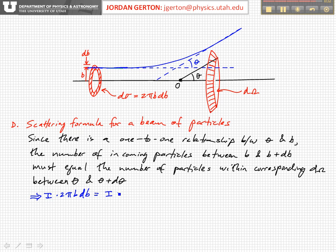Is equal to i times d sigma d omega, the differential cross-section, times the differential solid angle. Okay, so this tells you, this is where the physics is as we discussed in the last lecture, d sigma d omega, the differential cross-section.